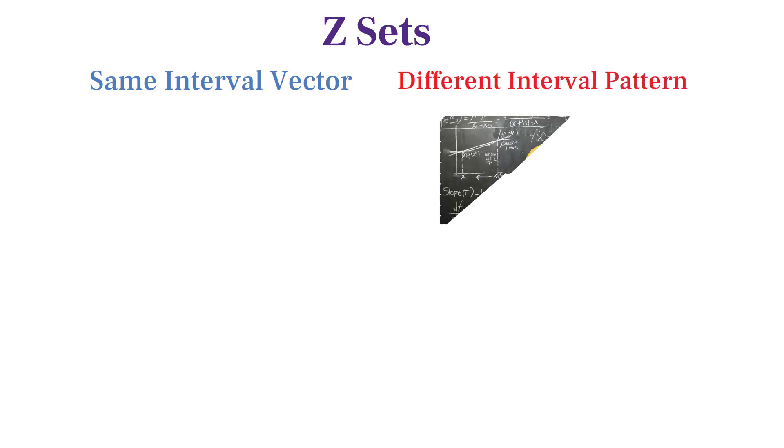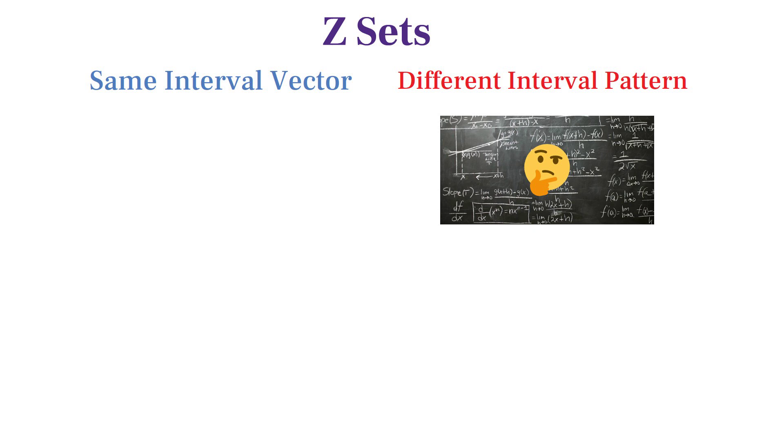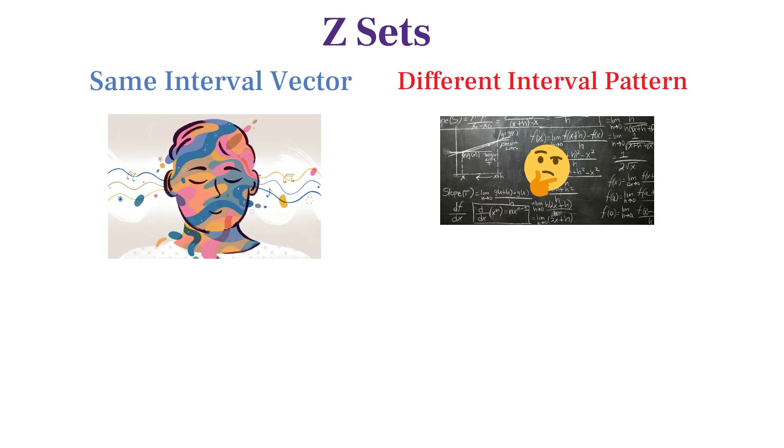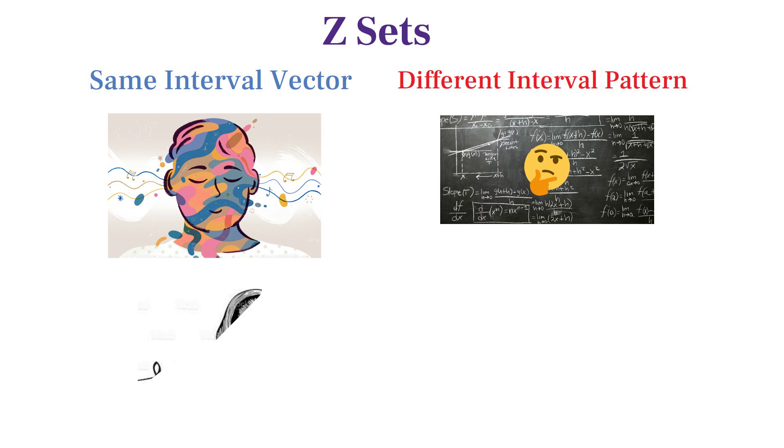Z sets are sets that have the same interval vector, but different interval patterns. It seems strange that different structures could bring about the same intervals, but it happens, and z-related sets debatably bear a rough resemblance to each other when listened to, because they contain the same intervals.